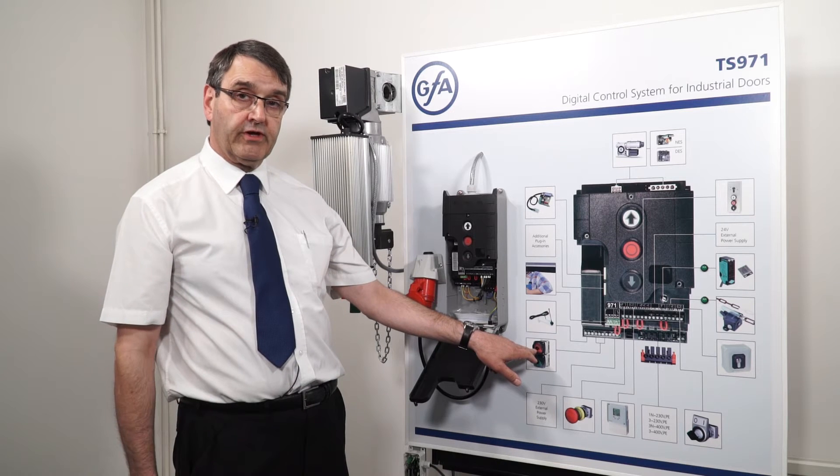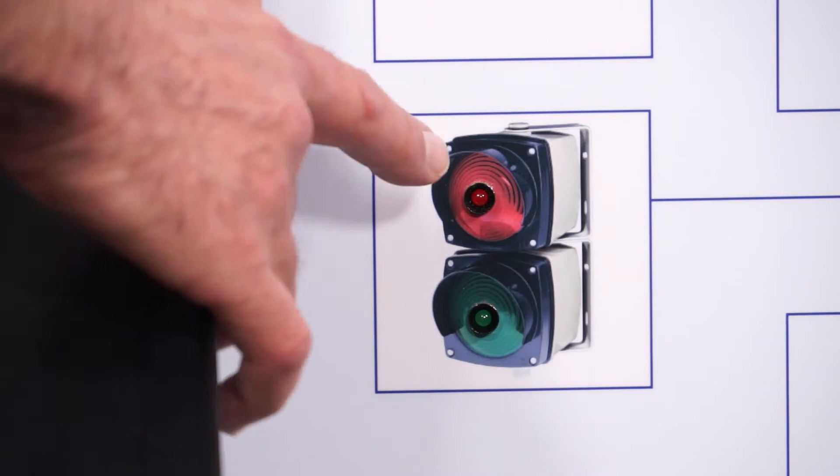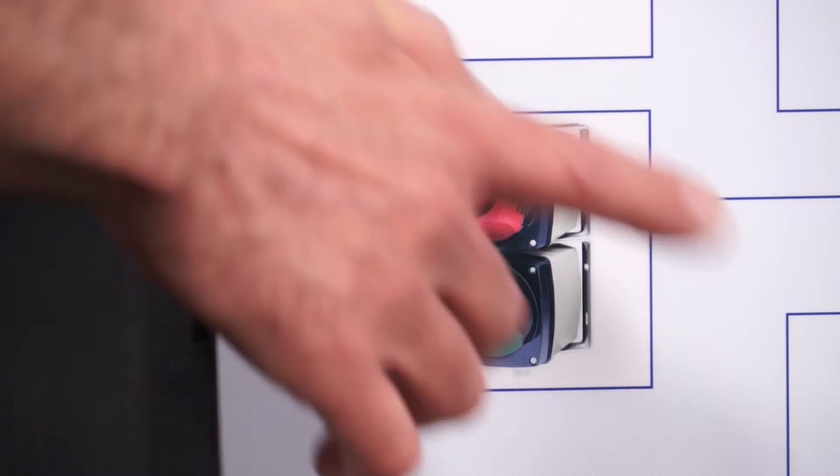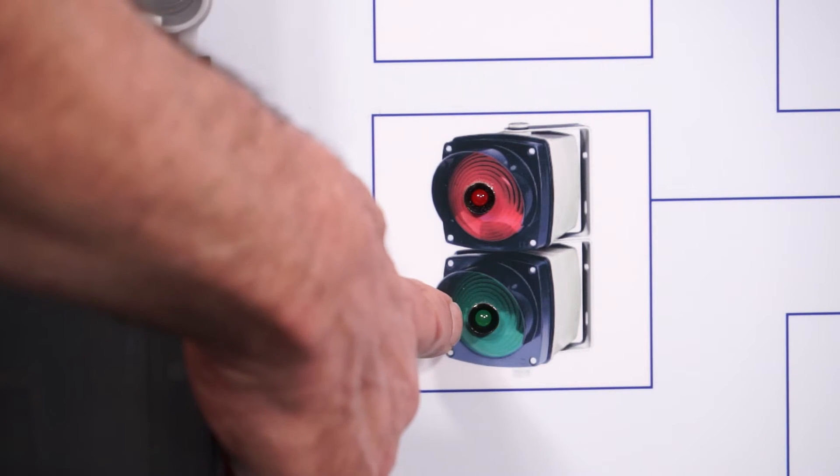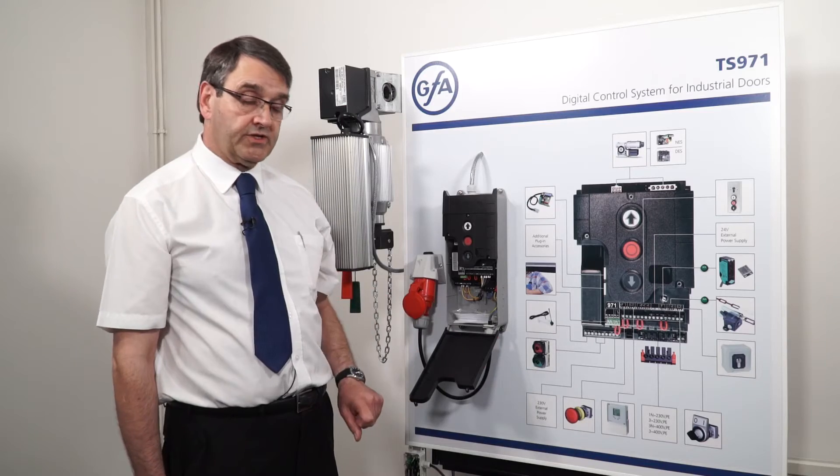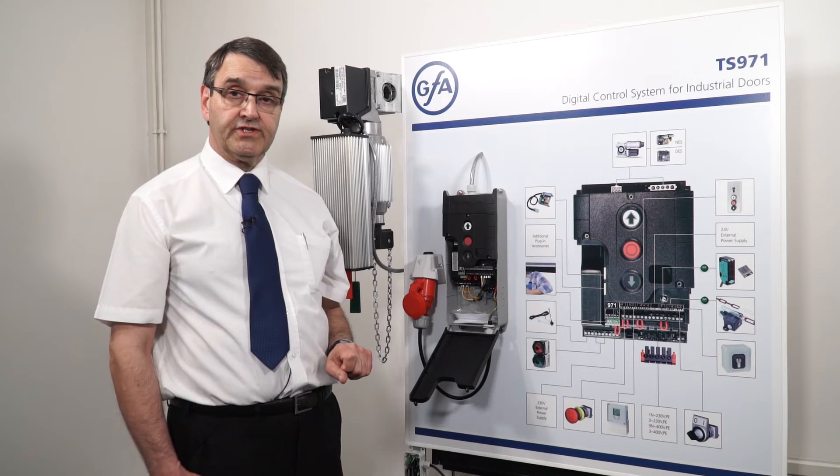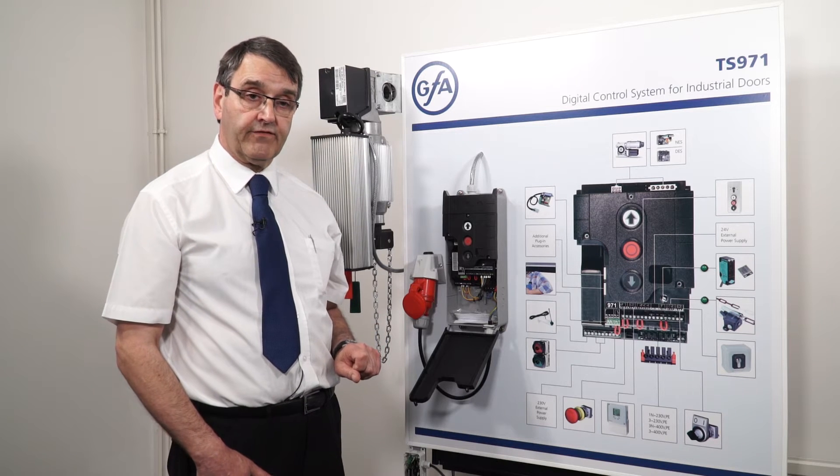The red light will be working off relay X20 and the green light will be working off relay X21. So what we need to do now is set those so that they give the correct function.